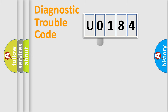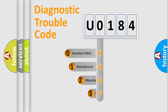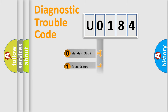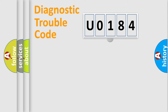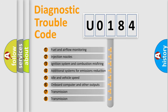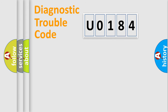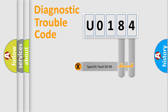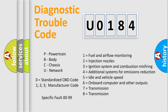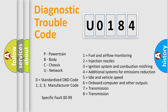This distribution is defined in the first character of the code. If the second character is expressed as zero, it is a standardized error. In the case of numbers 1, 2, or 3, it is a more manufacturer-specific expression of the car error. The third character specifies a subset of errors. Only the last two characters define the specific fault of the group. This division is valid only if the second character code is expressed by the number zero.